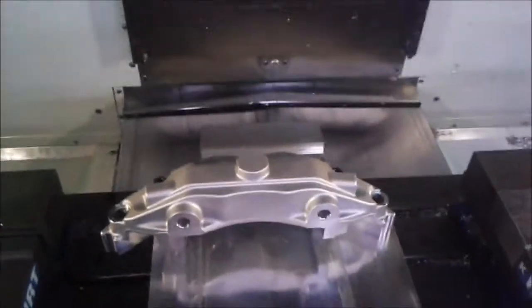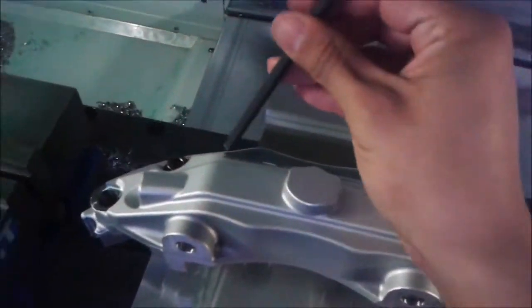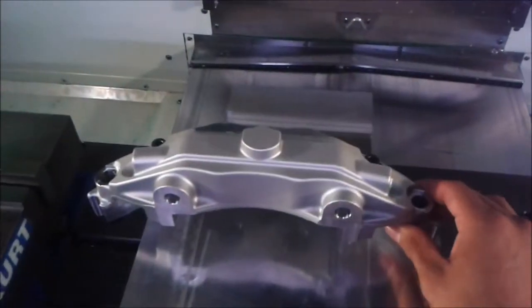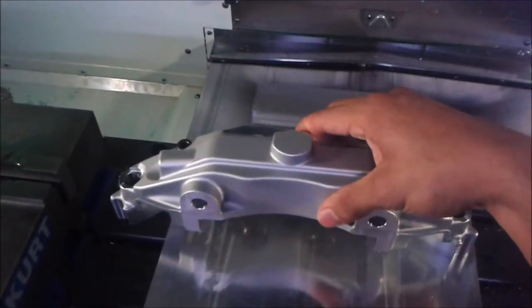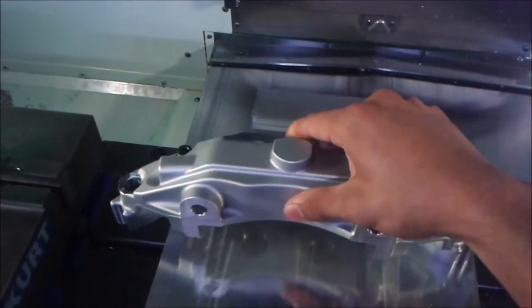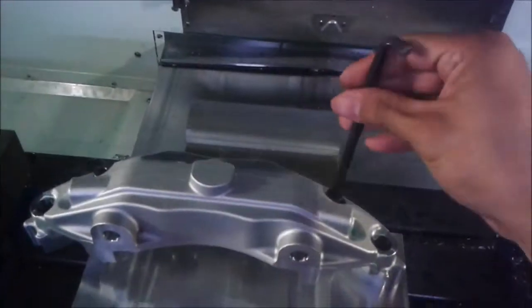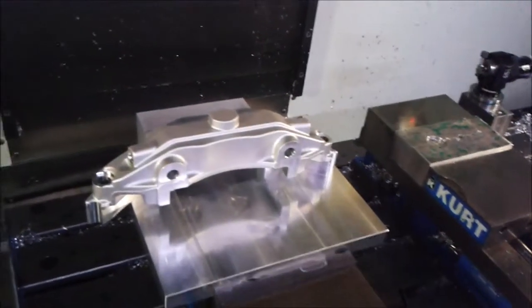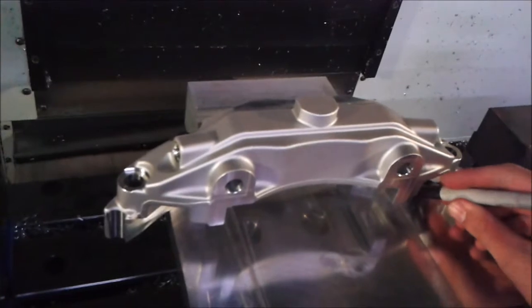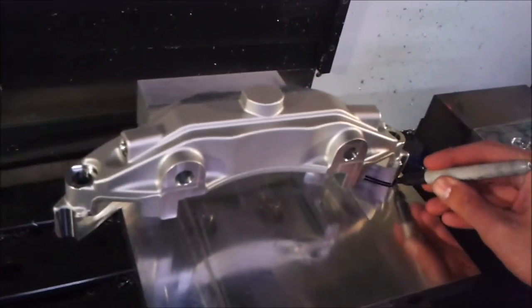This is the part that's going to be used to demonstrate G68 using the probe. As you can tell, the fixture isn't in the greatest position. It's only being held by two screws and there is a bit of angular play when doing a setup. We also went ahead and took the liberty to mark the original position when running this probing routine.